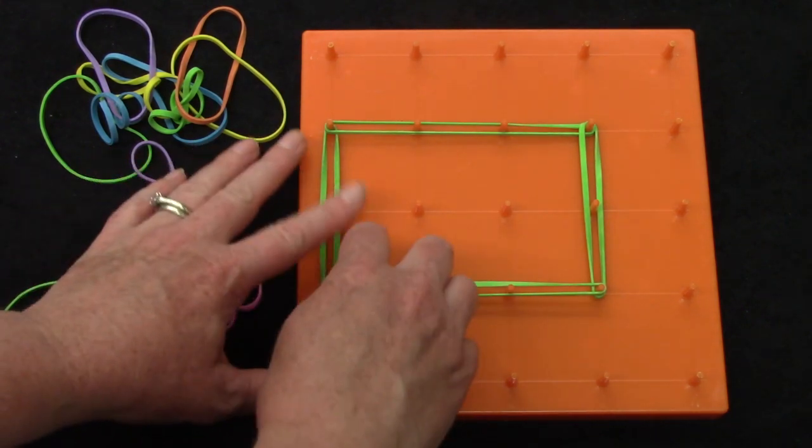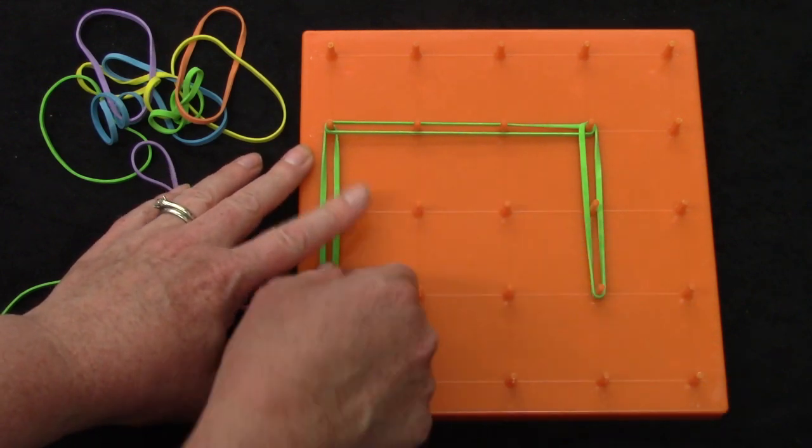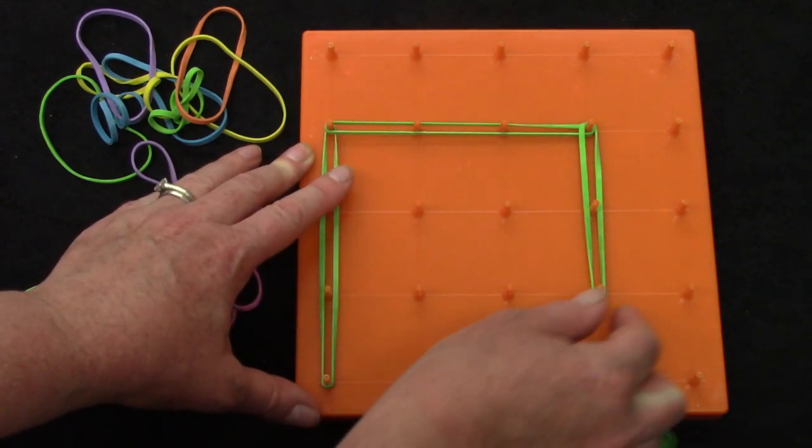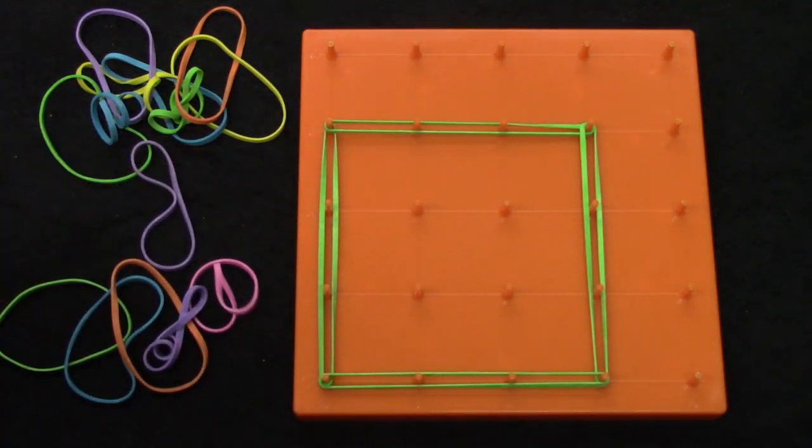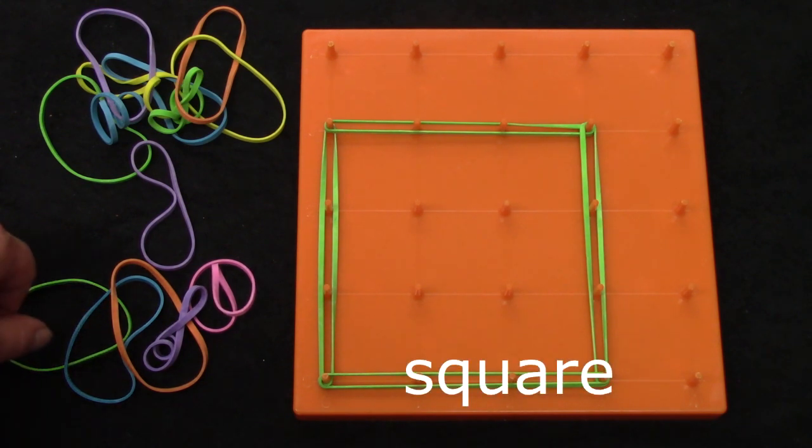I'm going to try to change this four-sided shape into a different shape. What is this shape called? Yes, it is a square.